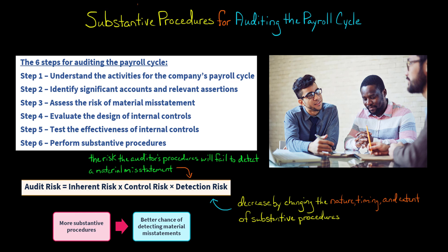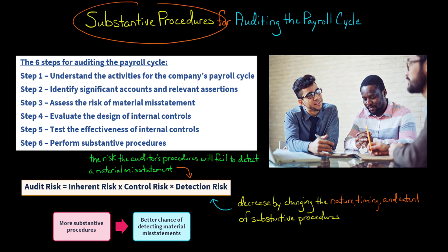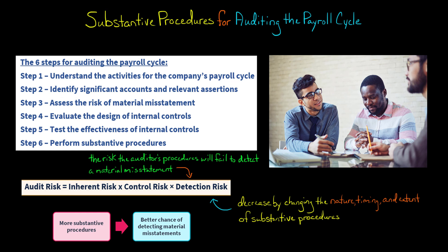In this video, we're going to discuss substantive procedures for auditing the payroll cycle. In previous videos, we talked about setting the level of inherent risk by identifying significant payroll-related accounts, and then we talked about setting the level of control risk — first by evaluating the design of the client's internal controls, and then testing the effectiveness of those controls.